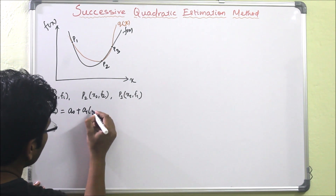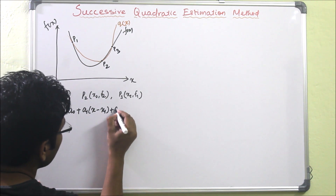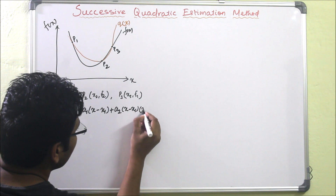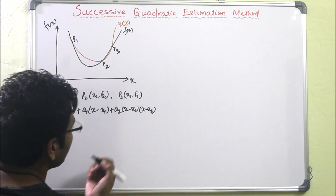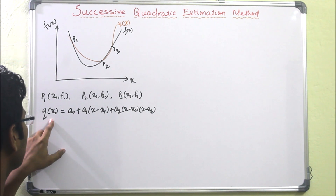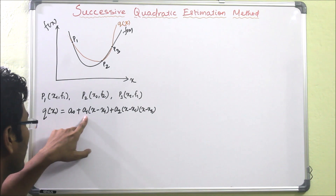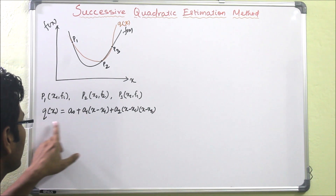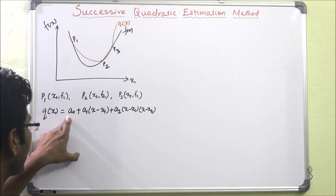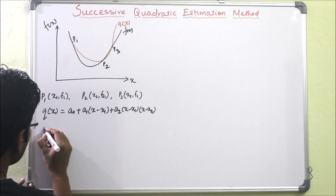We can write q of x as a0 plus a1 times (x minus x1) plus a2 times (x minus x1) times (x minus x2). This is the general form of the quadratic function. If we get the values a0, a1, a2, then we can find q of x. So our aim is to find a0, a1, and a2.